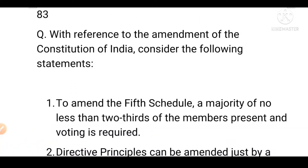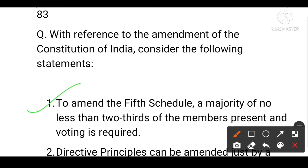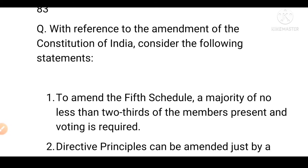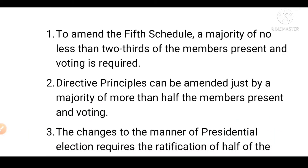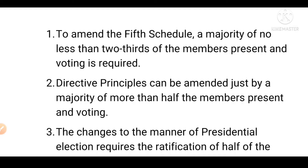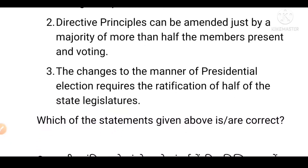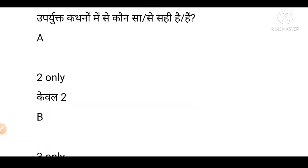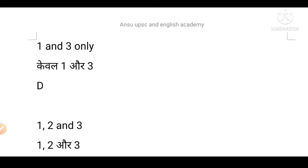Next question: With reference to the amendment of the Constitution of India, consider the following statements. First, to amend the Fifth Schedule, a majority of no less than two-thirds of the members present and voting is required. Second, to amend the Directive Principles of State Policy (DPSP), only a majority of members present and voting is sufficient. Third, changes to the manner of the presidential election require ratification of half of the state legislatures. Which statement is correct? Please mark your answer. Option A is second only, B is third only, C is first and third, D is first, second and third.